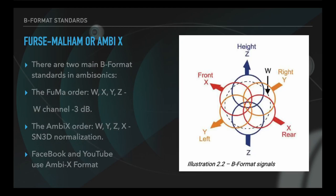There are two main B-format standards in ambisonics. The first is Malham, the so-called FuMa. The B-format FuMa lists channels in the order WXYZ, and the W-channel is like the center channel and it's attenuated by 3 dB. And there's the AmbiX format. It lists channels in the order WYZX. The channels use the Schmidt Semi-Normalization SN3D for first-order ambisonics, meaning the four channels have uniform gain normalization, so no component will ever exceed the peak value of the zeroth order component for single-point sources.